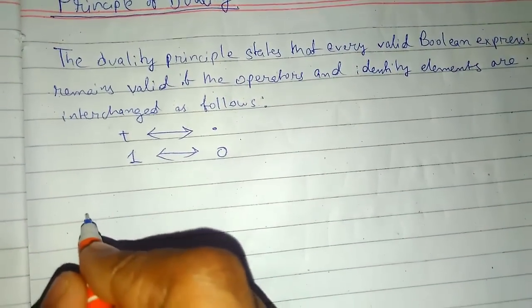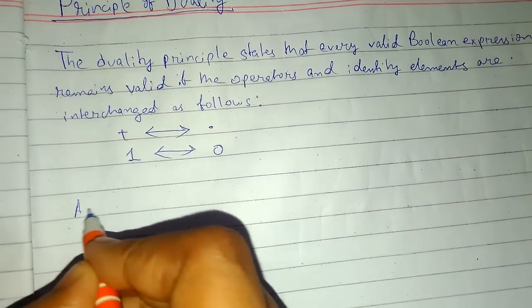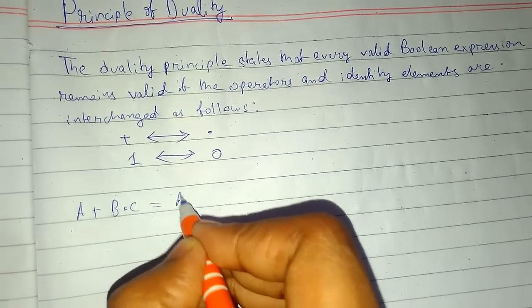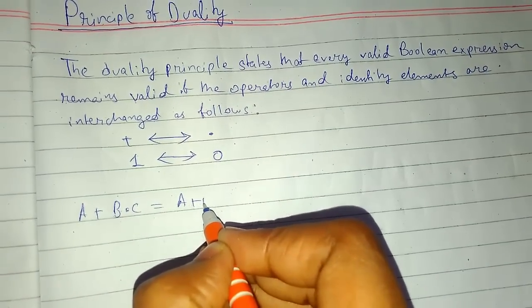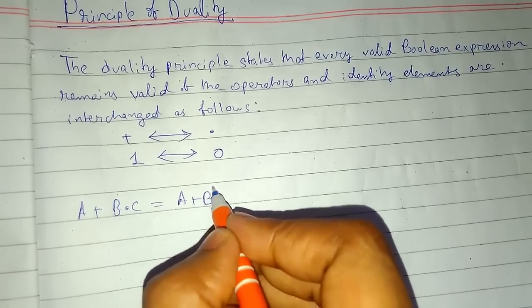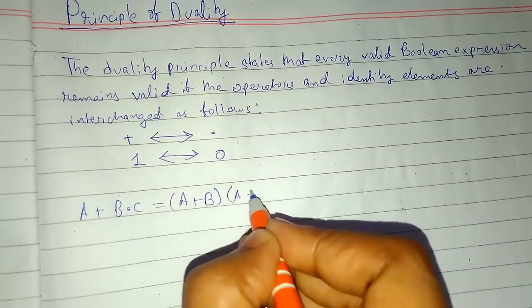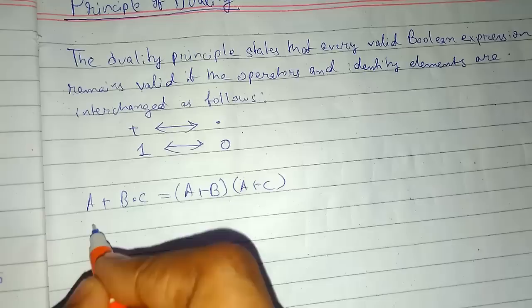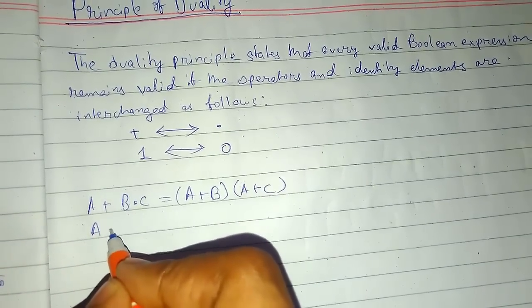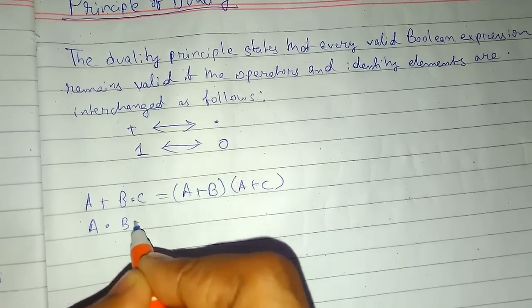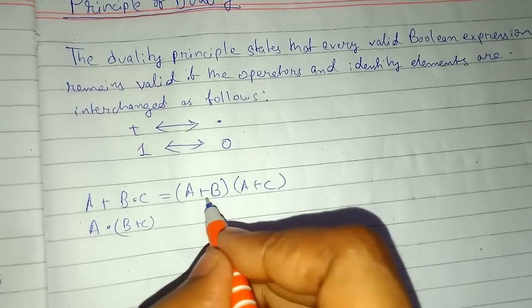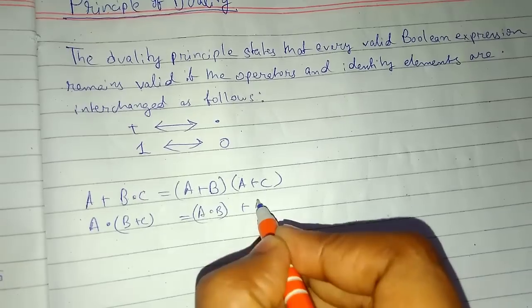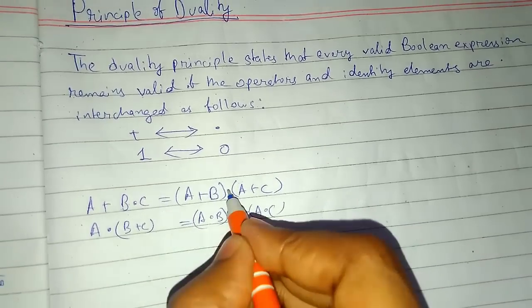For example, we have a plus b dot c. First, we need the valid expression. We can also write it like this. And the dual, if you write the dual of it, this will be something like this. And for this, it will be a dot b plus a dot c. You can convert it this way.